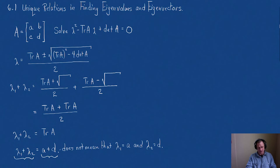Okay, that's the first thing I wanted to show you. The next one is, let's see what happens if I take lambda 1 times lambda 2. Let's see what happens. Well, that's going to give me the trace of A plus the square root of the discriminant over 2 times the trace of A minus the square root of the discriminant divided by 2.